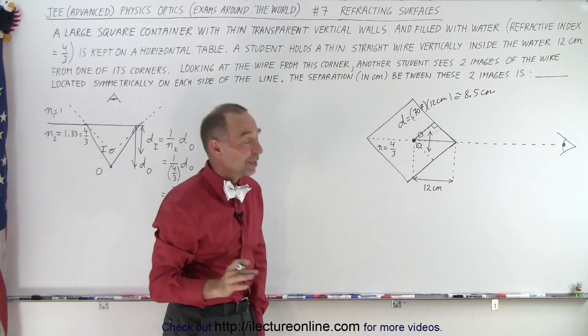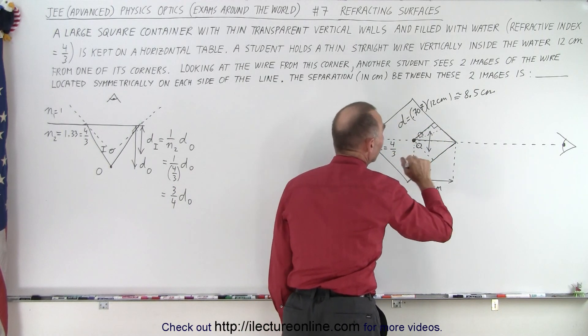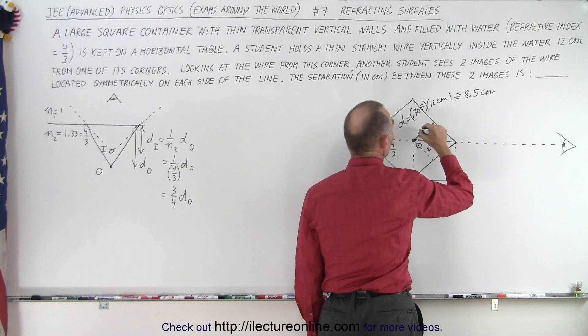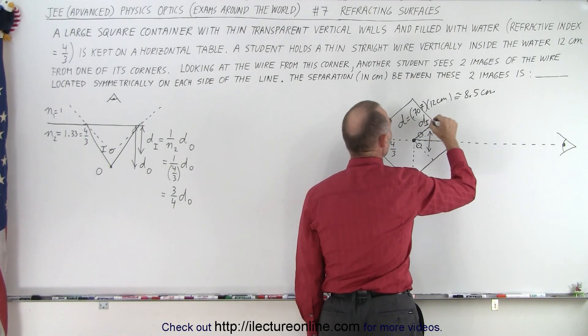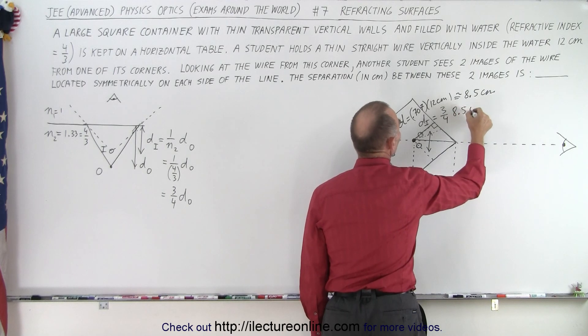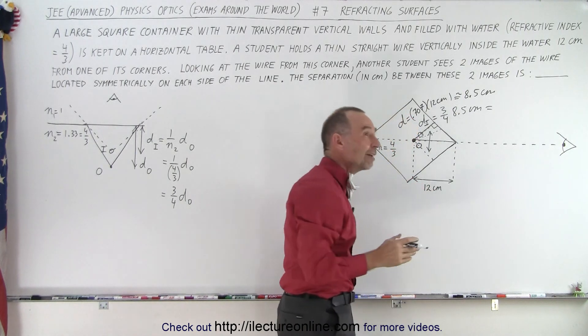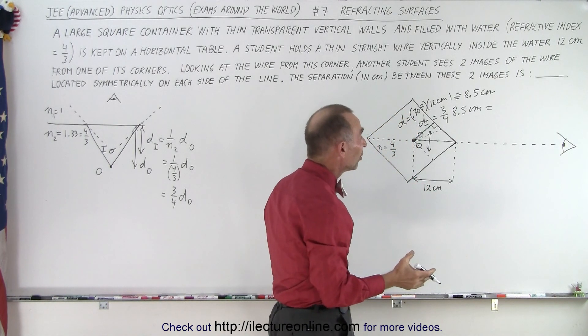That would give us about 8.5 centimeters. So, this distance D is about 8.5 centimeters. And then the image would be 3 quarters the way. That means that the image distance, D image, is equal to 3 quarters of 8.5 centimeters.